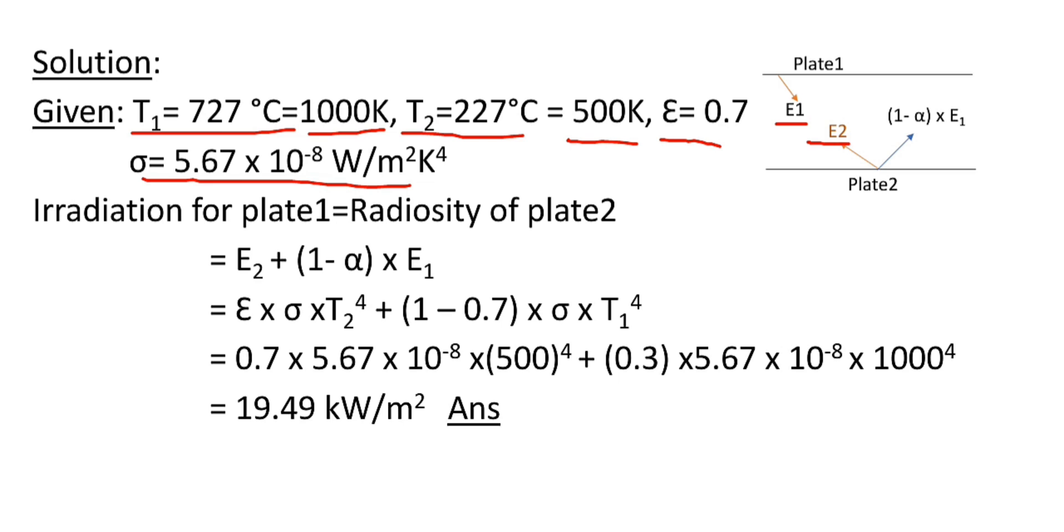When E₁ amount of energy radiation strikes on plate 2, then some part of E₁ will be absorbed by plate 2, and the other part, that is (1-α) × E₁, will be reflected and this amount of energy will strike on plate 1 again.